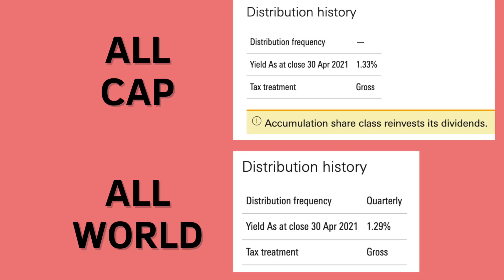Even the top 10 holdings are exactly the same across both funds. The All World has 3.17% in Apple whereas the All Cap has 2.78%, because the All Cap also includes small cap stocks so each large holding is slightly diluted. In terms of dividend yield, the All World has 1.29% and the All Cap has 1.33% as of 30th April — very similar. The key distinction on Vanguard is that the All Cap accumulation version automatically reinvests dividends, while the only All World available there is the income version (VWRL), which pays dividends as cash.